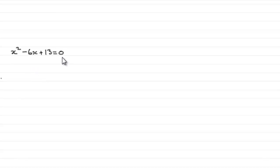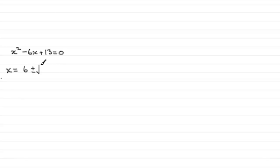So if we've got this quadratic equation x squared minus 6x plus 13 equals 0, if we wanted to solve it we could use the quadratic formula. Remember a is 1, b is minus 6, c is 13. Using the quadratic formula, x equals minus b — so that would be 6 — plus or minus the square root of b squared minus 4ac, which is minus 6 all squared minus 4 times a times c, all divided by 2a, so that's 2 times 1.